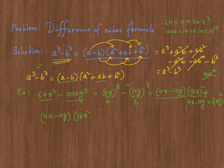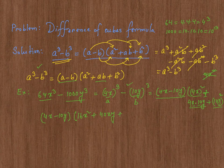Then plus 4x times 10y is 40xy, because 4 times 10 is 40, x times y is xy, plus 10y square, 10y whole square, which is 100 y square.